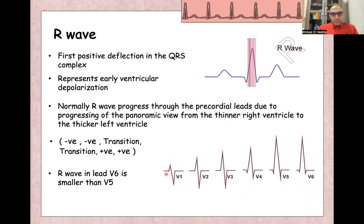The QRS complex, as you can see, normally progresses from negative, mainly negative complex, mainly negative complex, to transition, transition, and mainly positive complex, mainly positive complex.